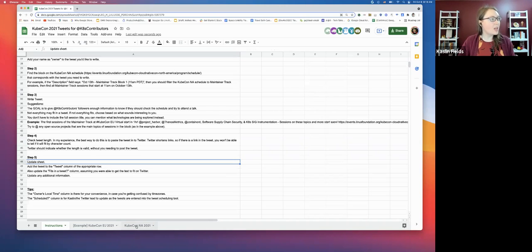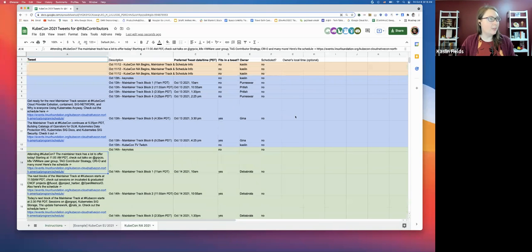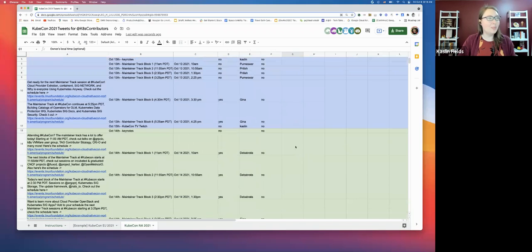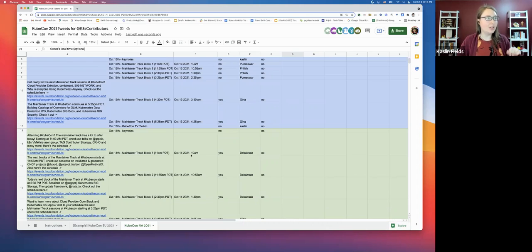If you are doing a block from the schedule, you would go and check out that schedule block on the actual KubeCon schedule and see what talks are happening during that time so that you can incorporate them into the tweet. So that's the write the tweet step, which is step three. Step four is check the tweet length. It doesn't work to just check the length to make sure that it's within 280 characters because Twitter shortens the links. So I usually put it into Twitter to check the length. And then step five is just to update the sheet with any other information. And that's about all I have to say about that.